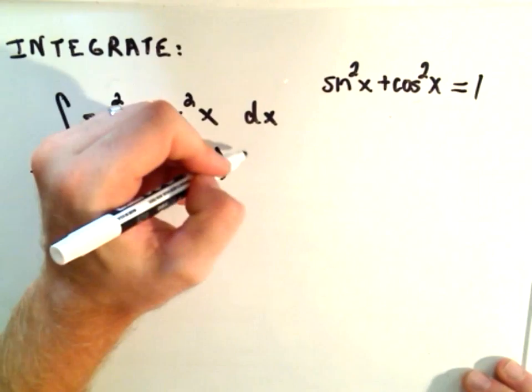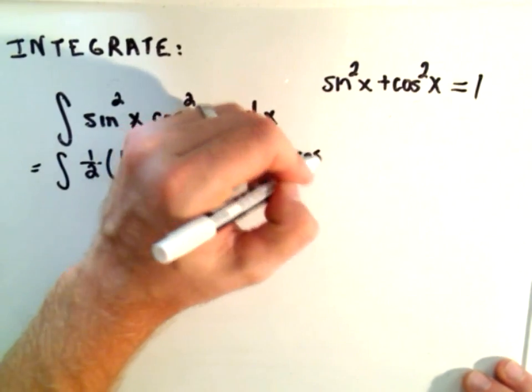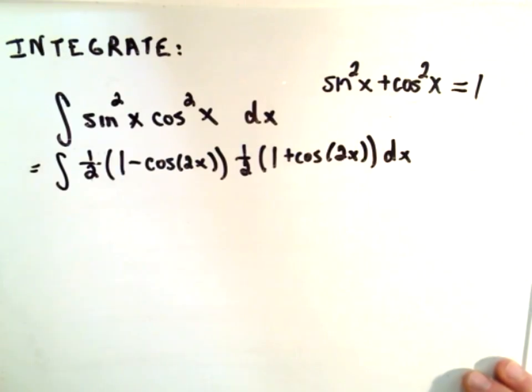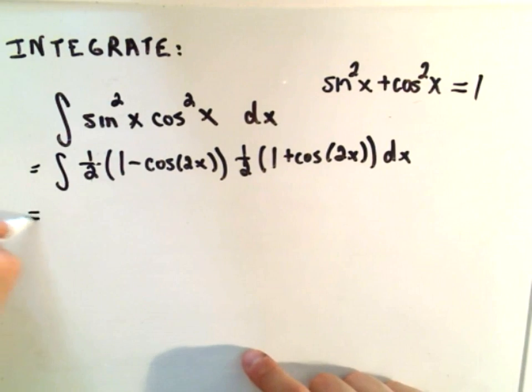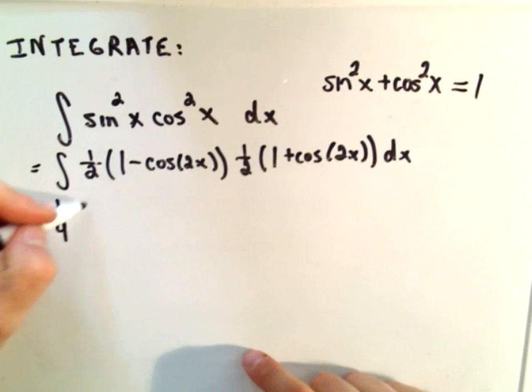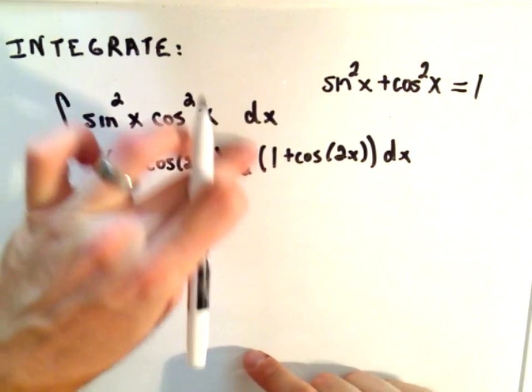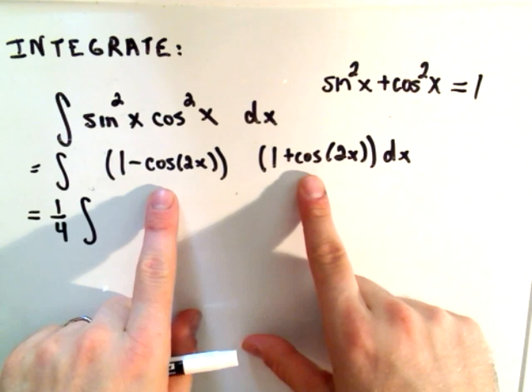And then cosine squared, that's one-half, one plus cosine of 2x. At this point, multiply the half and the half, which gives you one-fourth out front. That takes care of the halves. Now FOIL out the next two terms.